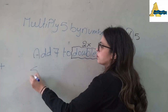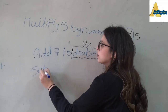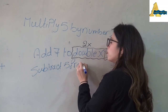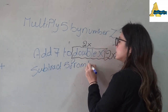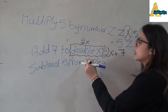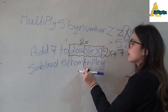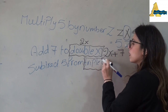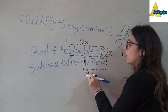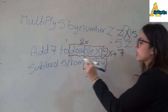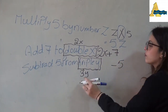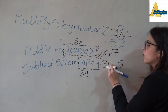If he said 'subtract 5 from triple y': triple y means 3y. Then subtract 5 means minus 5 from 3y. So the expression is 3y - 5.